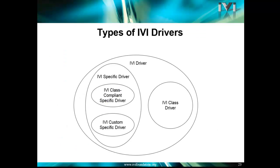A Venn diagram helps a little bit to understand that. Everything of interest here is an IVI driver — that is, it implements the architecture and the inherent capabilities. IVI-specific drivers are drivers that are written for specific instruments; those are frequently what you're interested in when you need to control an instrument. The Venn diagram may be a little bit misleading in that there's not very much that doesn't fit into one of these three inner classes.